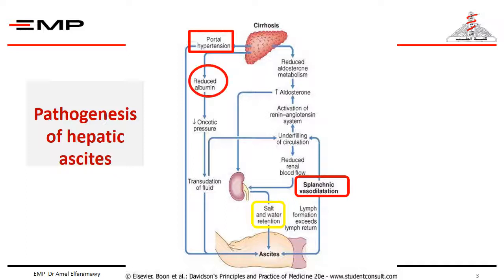Also, decreased albumin synthesis in liver cirrhosis leads to decreased oncotic pressure, resulting in transudation of fluids. The splanchnic vasodilatation leads to decreased renal blood flow, which activates the renin-angiotensin system, resulting in high aldosterone levels in addition to reduced aldosterone metabolism due to liver cirrhosis. This leads to salt and water retention and accumulation of fluid in the peritoneal cavity.